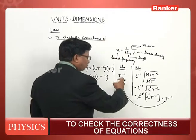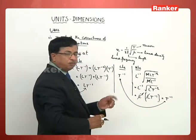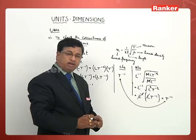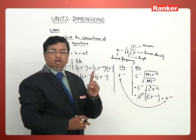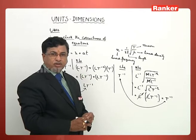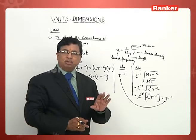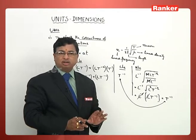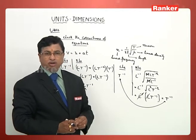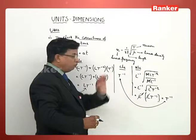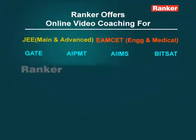Since both sides have the same dimensional formula, we can once again conclude that this equation is dimensionally correct. Whether the equation given to us is dimensionally correct or not, we can make use of dimensional formulae to work that out. That is one more example of the first use of dimensional analysis.